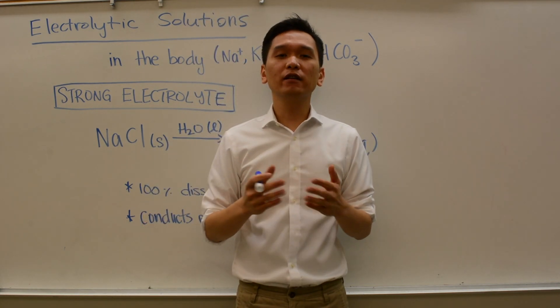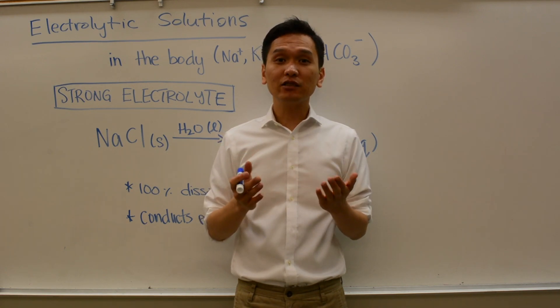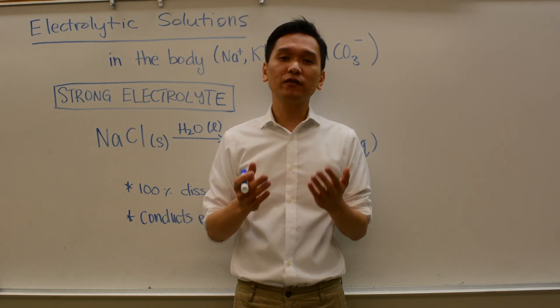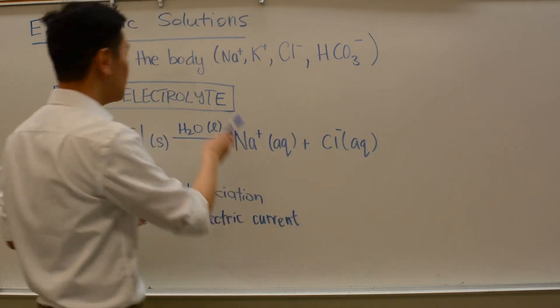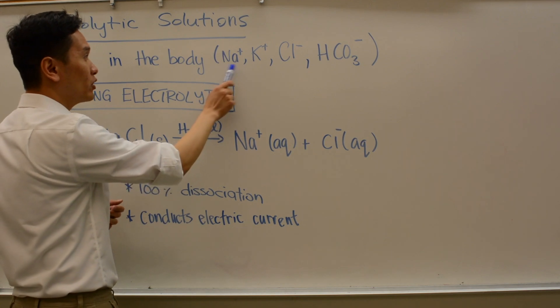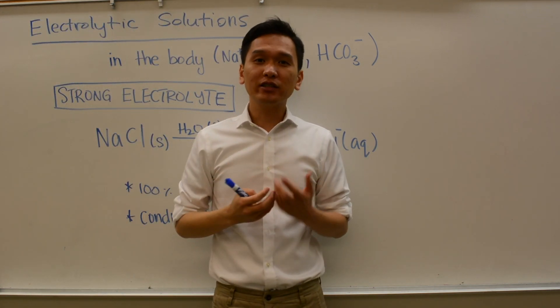Electrolytes are very important for the proper functions of cells and organs in our body. For example, some of the electrolytes in our body are sodium, potassium, chloride, and bicarbonate, and we can measure these in your blood.